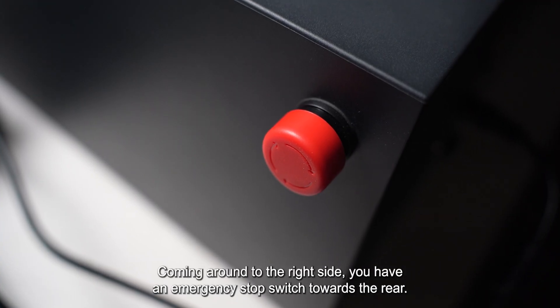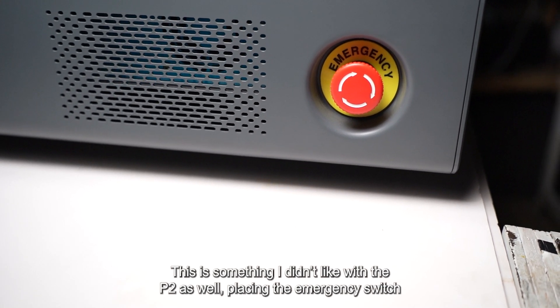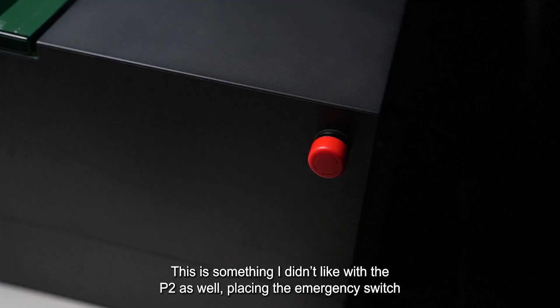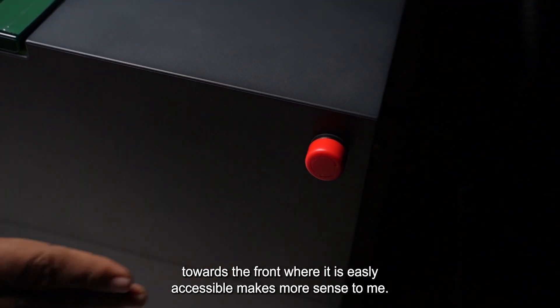Coming around to the right side, you have an emergency stop switch towards the rear. This is something I didn't like with the P2 as well. Placing the emergency switch towards the front where it's easily accessible makes more sense to me.